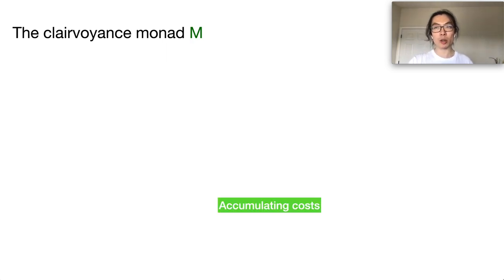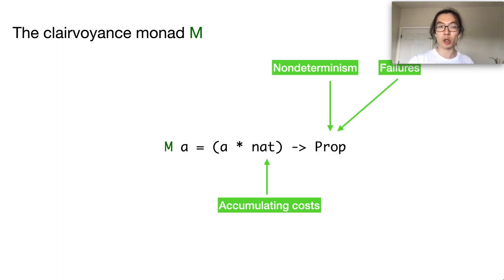We can answer this question by asking what do we want from this monad. First, we want it to be able to accumulate a computation cost inside a program. And second, we want it to be able to model non-determinism. And finally, we want it to be able to model failures in certain non-deterministic branches.